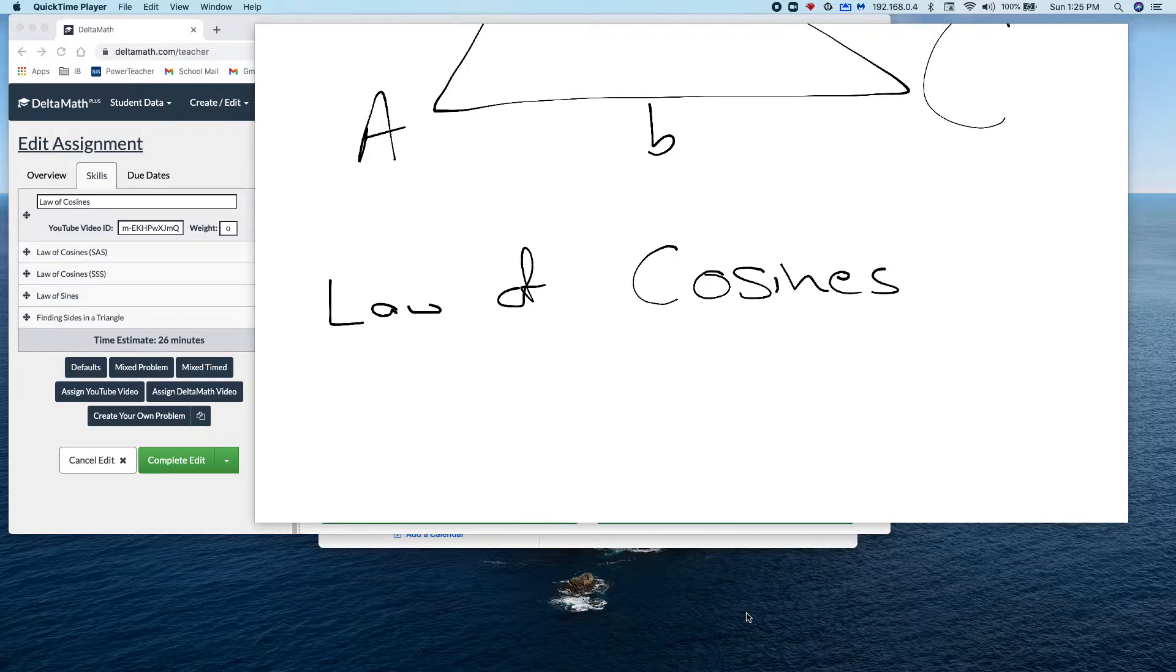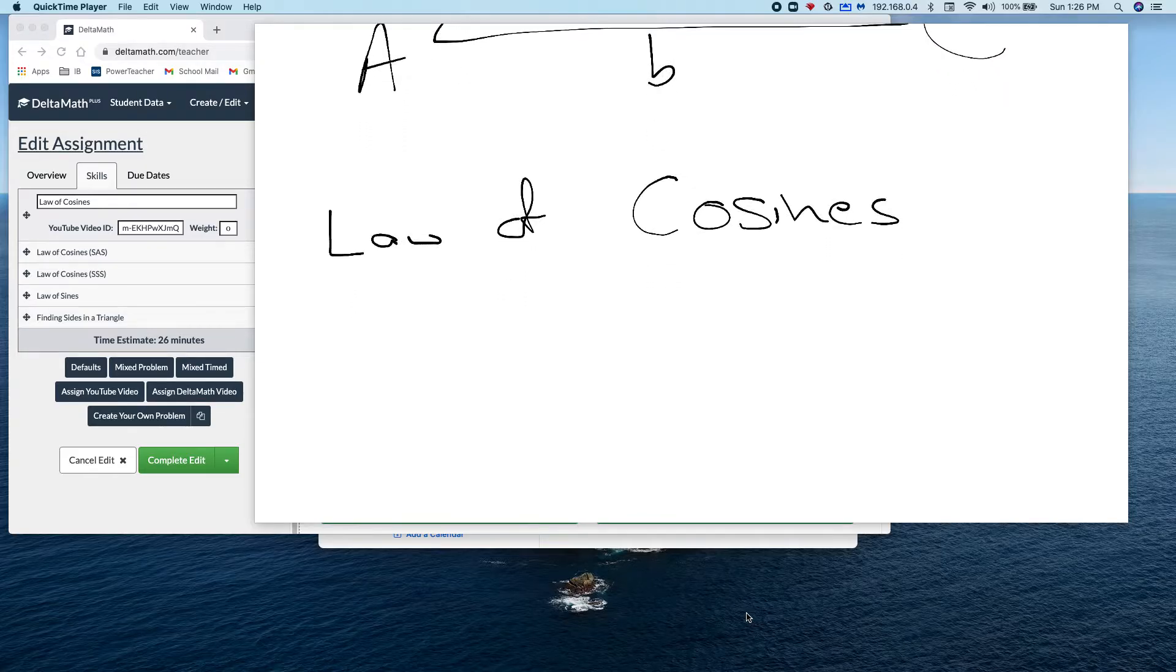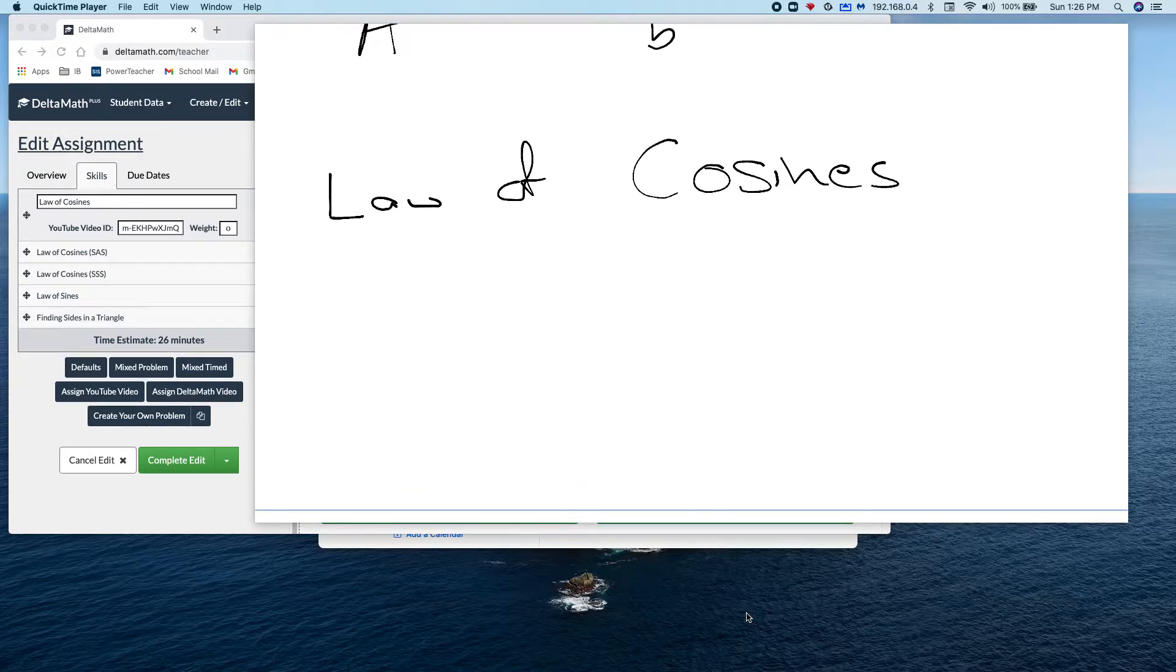And it's really based off of the Pythagorean theorem. So I'm going to show you what it is and then show you two alternate things that you can do to figure out what you're missing. These are interchangeable. c squared is equal to a squared plus b squared minus two times a times b times the cosine of c. Now it's important to note what this looks like. It actually looks like the Pythagorean theorem because it actually is the Pythagorean theorem and then just that extra piece off of there.